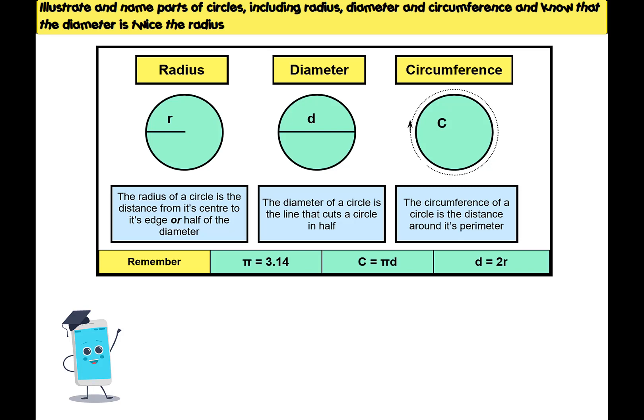Now in this instance, in this example, it's cutting it across horizontally. However, it's worth noting that that line could go through diagonally. It could go from top to bottom. It doesn't have to be across the middle horizontally like that. If it passes from one edge to the other, through the centre, then it is the diameter.